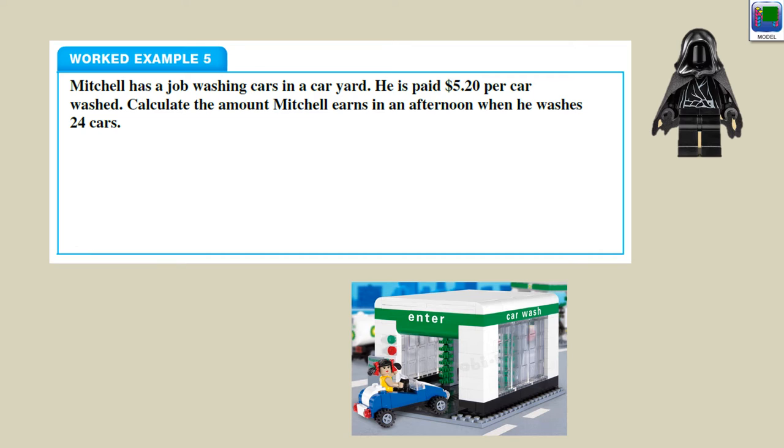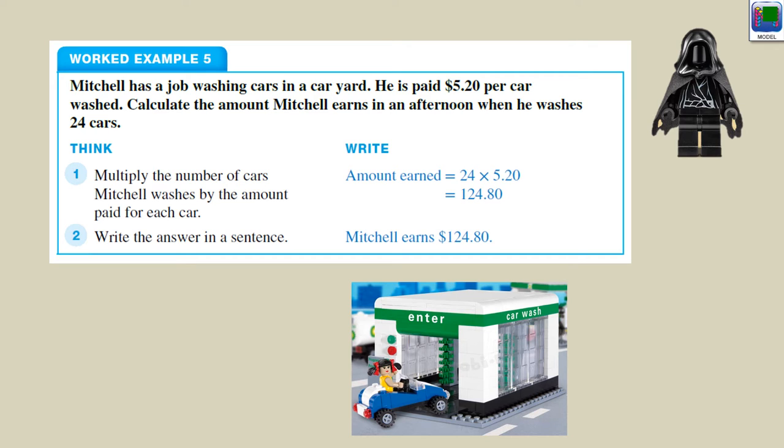Let's look at an example. Mitchell's got a job washing cars. He's paid $5.20 per car washed. Calculate the amount that he earns in an afternoon when he washes 24 cars. That sounds like a lot of work. That much per car, that many cars. We multiply them together, we'll get our answer. He washes 24 cars, $5.20 per car, he makes $124.80. Put a dollar sign in front of it, that's what he earns. It's that simple.